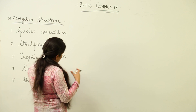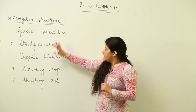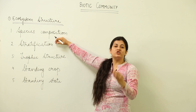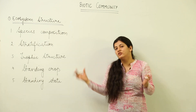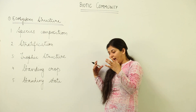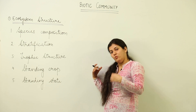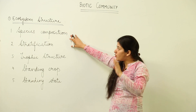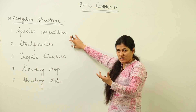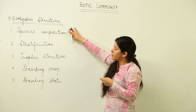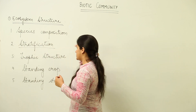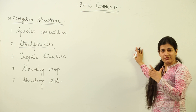The first structural component is species composition — how many species are present within an ecosystem. An ecosystem is considered more diverse and advanced if it has a greater number of species. Species composition gives us an idea about which organisms are present in a specific environment, and understanding it helps us move to the next structural specification.